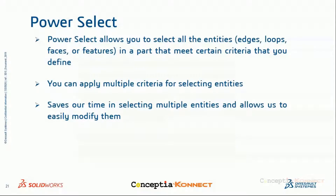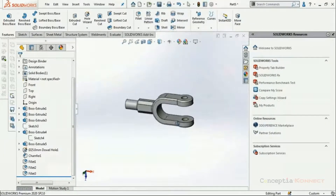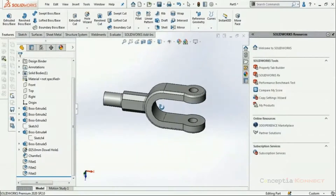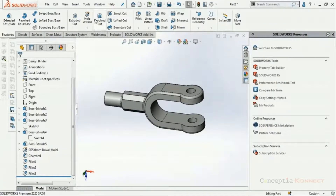Power Select allows you to select entities in a part that meet certain criteria. If you manually select edges, faces, or vertices, it would take a long time or you might miss some entities. It can also be frustrating if you accidentally release the Ctrl key and lose all your selections. Power Select can be used to overcome such difficulties. I have a small knuckle part model open in my SOLIDWORKS window.